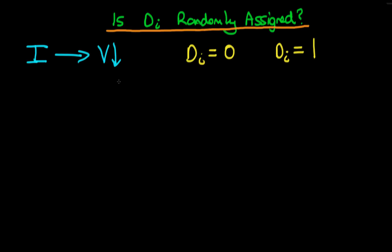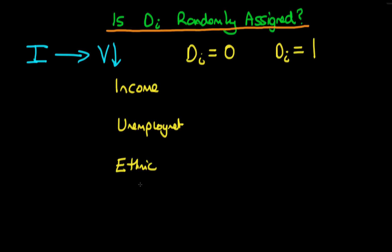So what variables might we look at? We might look at the level of income within those certain regions. We might also look at the level of unemployment, both of which have been shown to be relatively important determinants of whether a certain region actually has a higher level of civil conflict. We might also look at the level of ethnic fractionalization across the two different groups, as this has been shown in some studies to be a determinant of the level of civil conflict within an area.